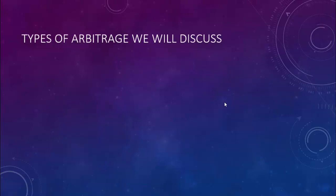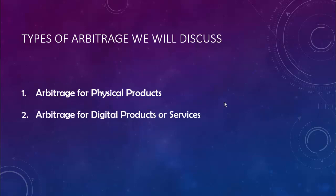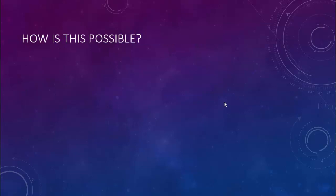Now let's see what types of arbitrage we will discuss in this course. First, we will discuss arbitrage for physical products — like the iPhone example, but it can relate to any type of physical product, even shampoo. Then we will also discuss arbitrage for digital products or services, which is a newer type of arbitrage that is getting more and more traction and can be a very lucrative business model.